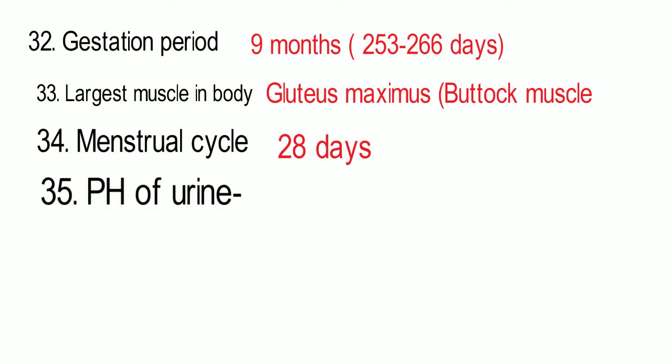The pH of urine is 6.0, meaning urine is slightly acidic.